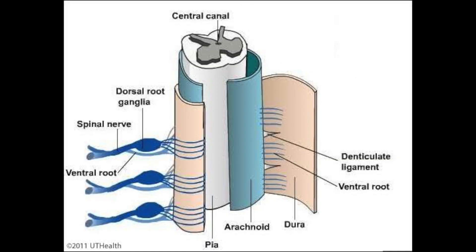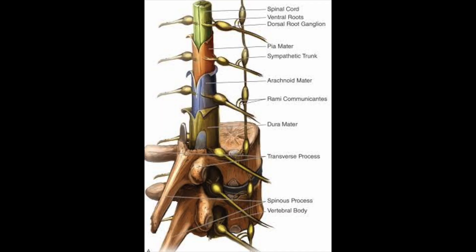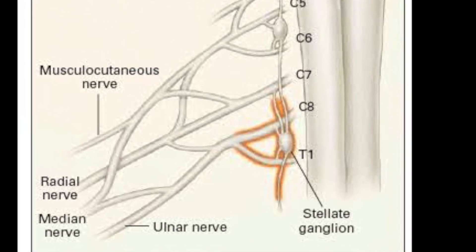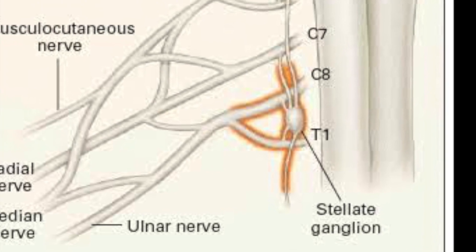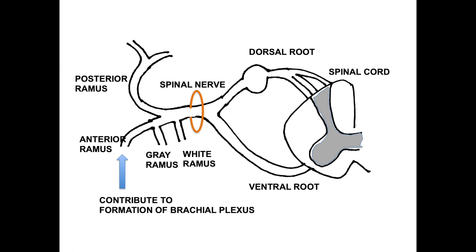These roots are supported by the denticulate ligaments, which are stronger in the C5–6 segment than the C8–T1 segment. After exiting the foramen, the spinal nerve gives two main divisions — the posterior ramus and the anterior ramus — and two small divisions: the grey ramus and the white ramus. The white ramus contains preganglionic sympathetic fibers, while the grey ramus communicans contains postganglionic sympathetic fibers. Note the close proximity of the cervical sympathetic chain and the stellate ganglion to the C8–T1 level roots. The posterior primary ramus innervates the skin and muscles of the back of the neck; the anterior rami go on to form the brachial plexus.